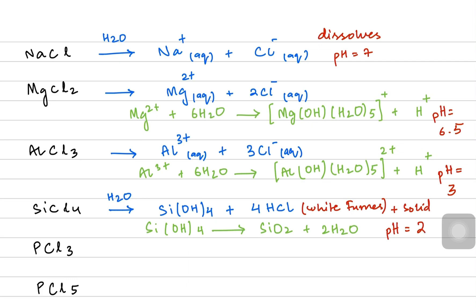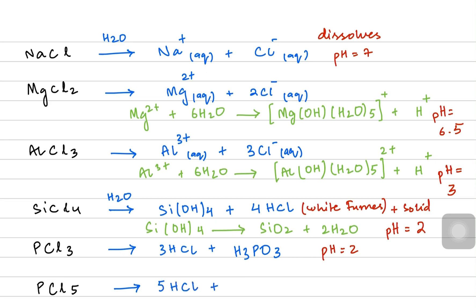When phosphorus trichloride dissolves in water, hydrochloric acid is again produced and fumes of HCl are observed. The other product is H₃PO₃, known as phosphorous acid, where the oxidation number of phosphorus is +3. With phosphorus pentachloride the products are HCl and H₃PO₄, known as phosphoric acid, and the pH is again around 2.